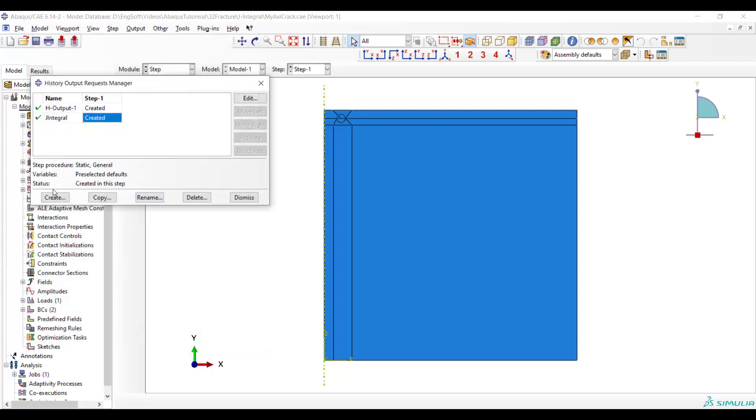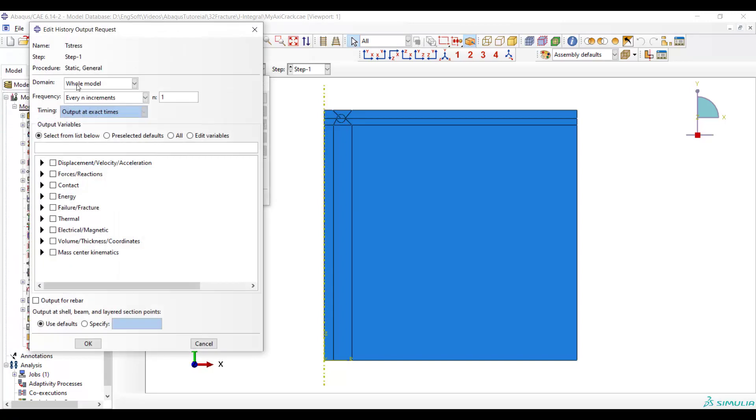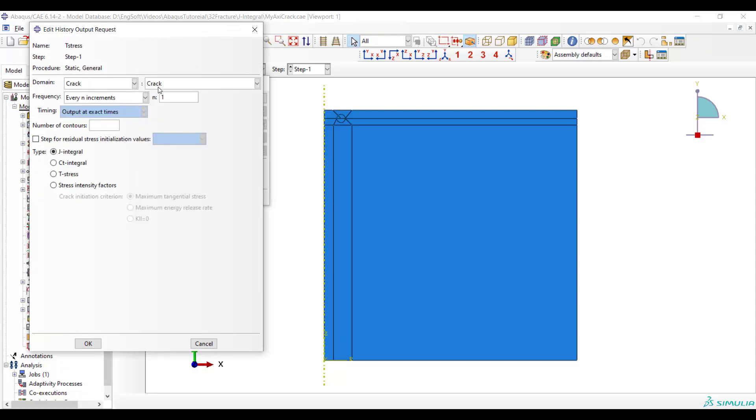Now we add the T-stress contour by picking crack and also setting the number of contours to be five. Please notice that CT-integral only can be used for problems with creep behavior.